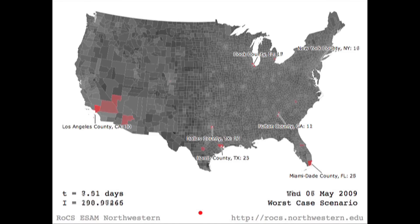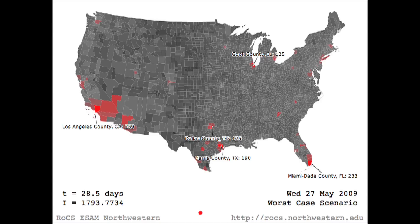We computed what is known as the worst case scenario — that is, what would happen, how would this disease spread if no measures were taken at all? This is a four-week projection. In the worst case scenario, we project around fifteen to seventeen hundred cases in the United States. Of course there are measures being taken, and so as time progresses, the prediction is going to be different from what is actually happening.